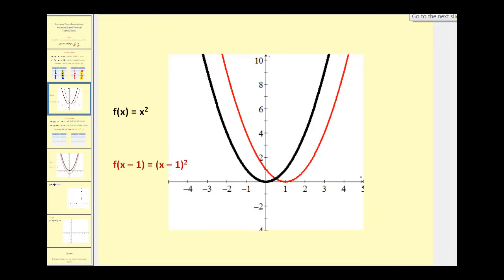Here's the graph of these two functions. What you'll notice is for any corresponding point — let's say the vertex on the original function and the vertex on the shifted function — it's 1 unit to the right. Pick any point on the original function and the translated function will be 1 unit to the right. Let's look at an animation of this.